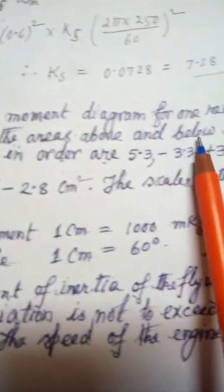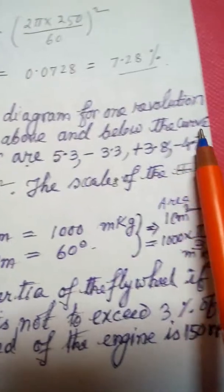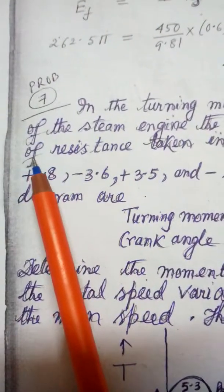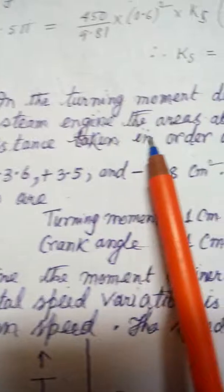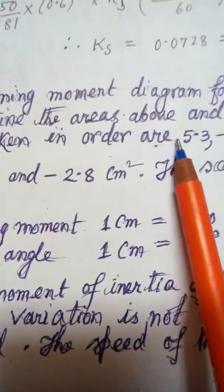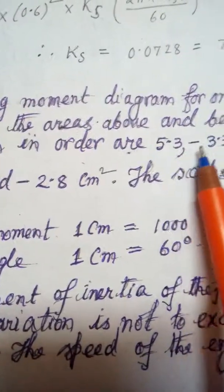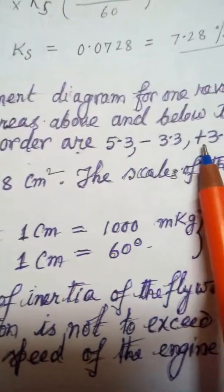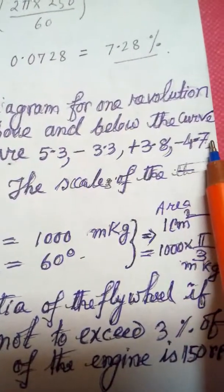The areas above and below the curve of resistance taken in order are 5.3, minus 3.3, plus 3.8, minus 4...